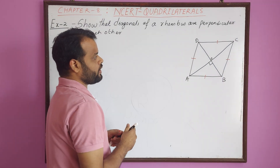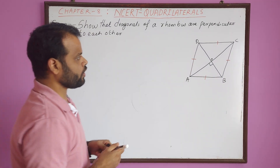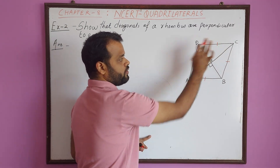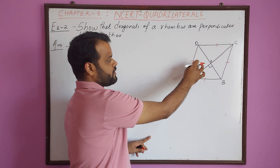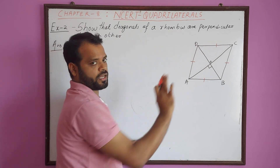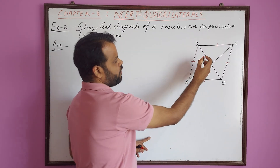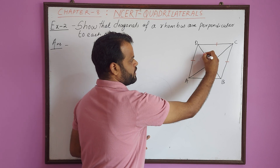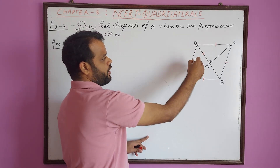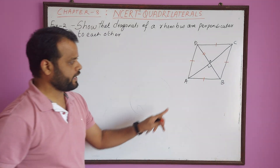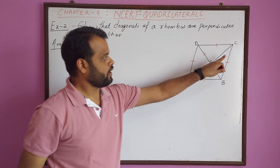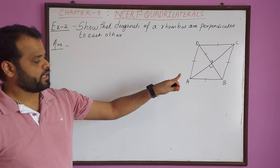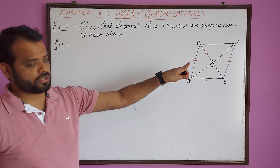In triangle AOD and COD, one side AD is equal to CD. Why? Because all sides of a rhombus are equal. Then OD is common between these two triangles. And for the last side, OA and OC.